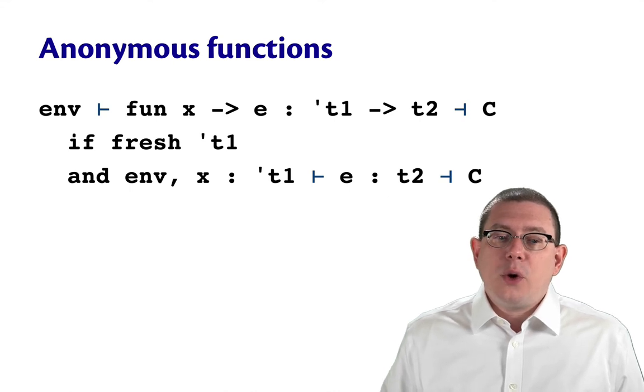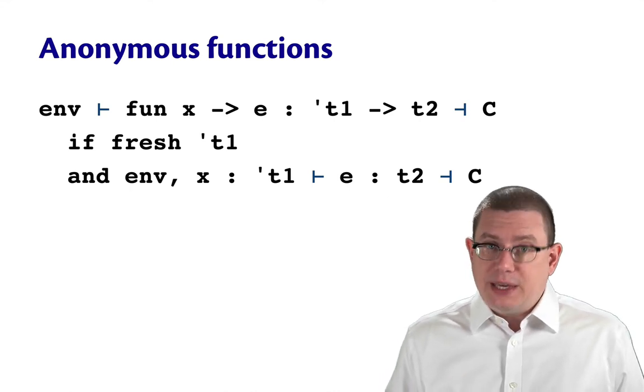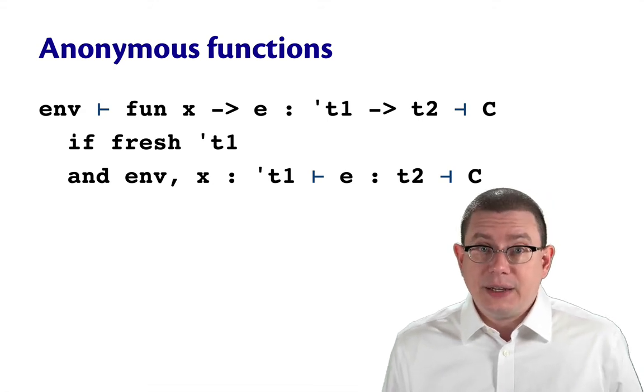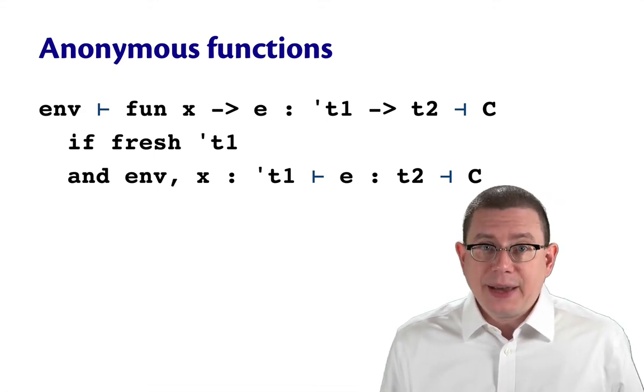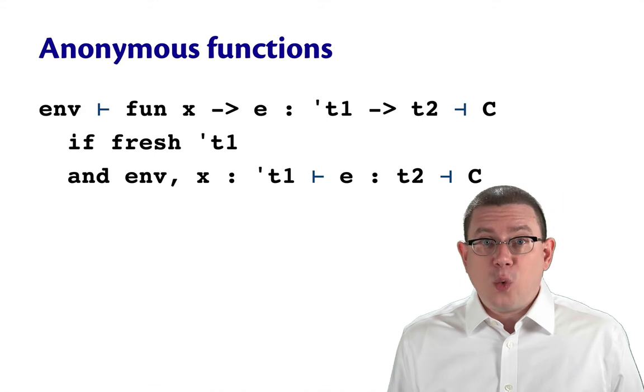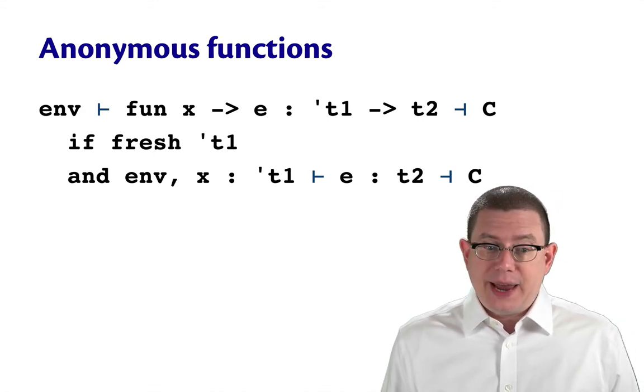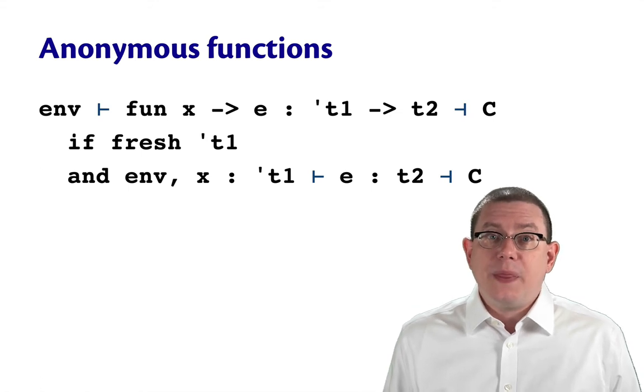Then we go ahead and infer the type of e in an environment that is extended to bind the name x to the type tau1. So anywhere we go to look up that name inside of e now, we'll get back that his type is tau1, that type variable.